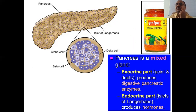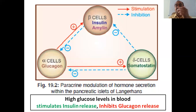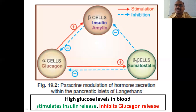The pancreas is a mixed gland. The exocrine part releases products through ducts and produces digestive pancreatic enzymes. The endocrine part is called the Islets of Langerhans. It secretes hormones directly into the blood. The Islets of Langerhans consist of three cell types: alpha cells, beta cells, and delta cells. Alpha cells release glucagon; beta cells release insulin and amylin; delta cells secrete somatostatin.